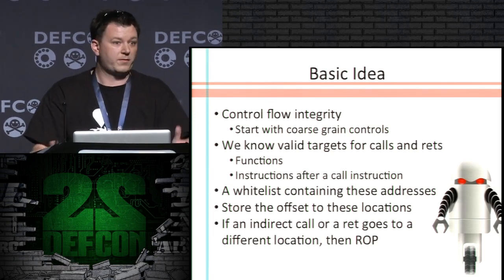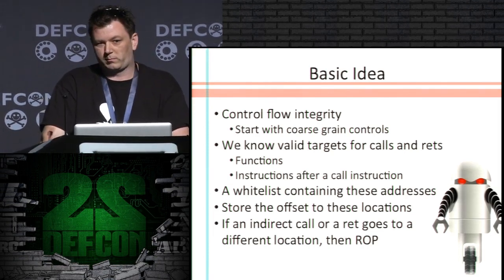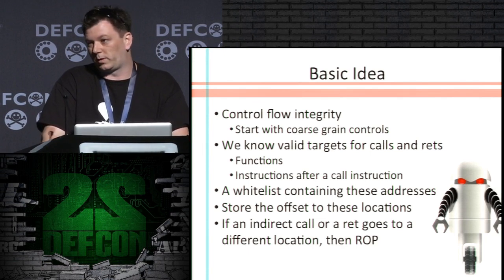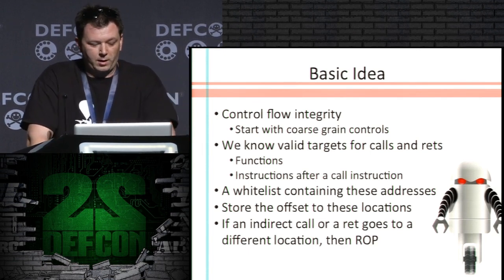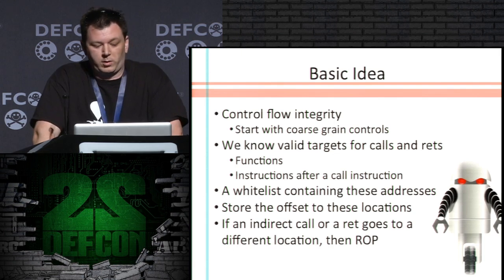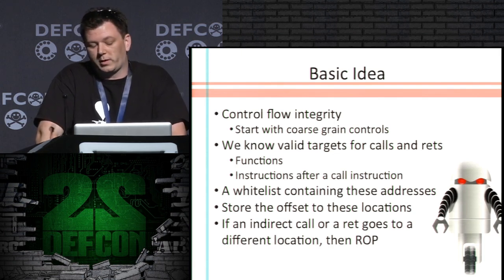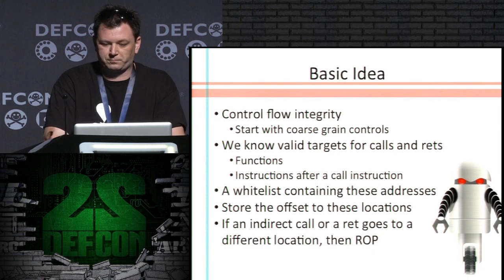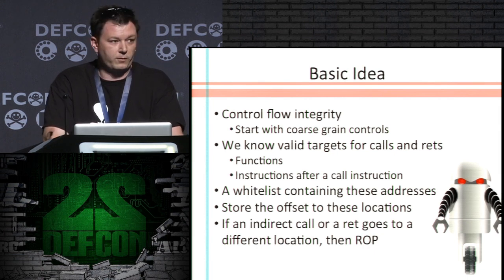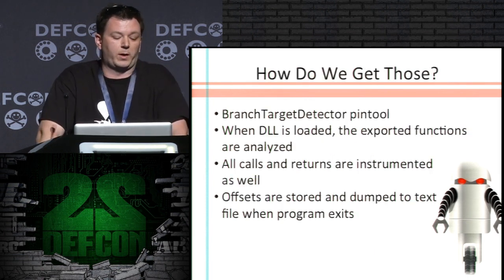We store the offset to these addresses because DLLs are loaded with ASLR. If an indirect call or return doesn't go to one of these addresses, then we flag it as a ROP. So first we have to get those offsets and build our whitelist.